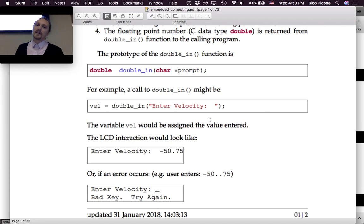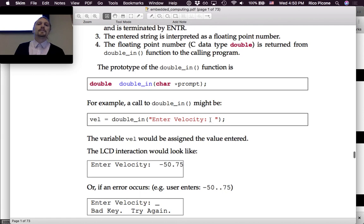And it's going to return whatever the user enters into the keypad, as long as it's something that's a valid character. Person enters stuff into the keypad and it's going to be returned to vel and assigned to the vel variable. This double_in will wait until you've hit enter and then it'll return it.